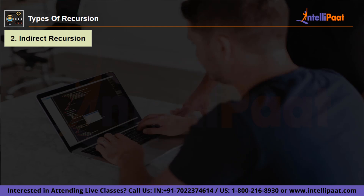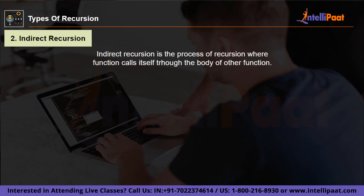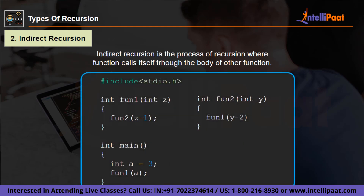Next up we have indirect recursion. Indirect recursion exists when a number of functions are interdependent. For instance, function A calls function B and function C responds to that call. Indirect recursion occurs when function C, under any situation, calls back to function A. As you can see in this example, these two functions are interlinked.